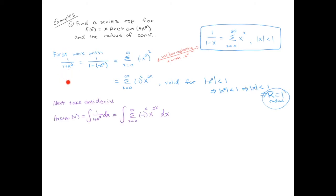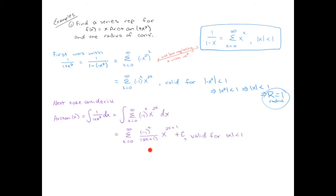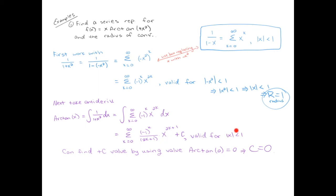The series for 1 over 1 plus x^2 is now fully calculated. Since arctan is the antiderivative of 1 over 1 plus x^2, we take the antiderivative of our series term by term: add 1 to the power and divide by 2k+1. Don't forget the plus c. We can find c by using the fact that arctan(0) = 0: plugging in x = 0 shows the series equals 0, which implies c = 0.